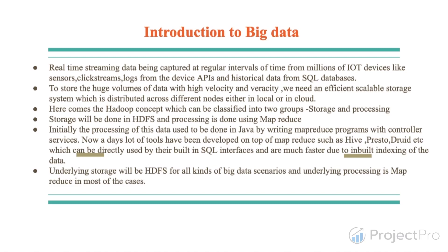These two categorizations — data at rest and data in motion — can be termed as big data. The data is very huge in volume, and initially we didn't have enough tools to extract real-time streaming data. We only had SQL-type transactional databases where we would dump structured data and query on top of it. Nowadays, new tools have been developed to extract real-time data in structured, semi-structured, and unstructured formats.